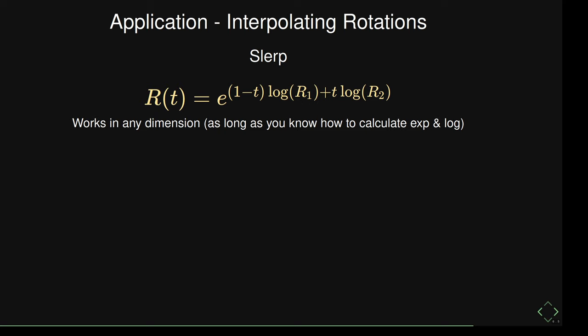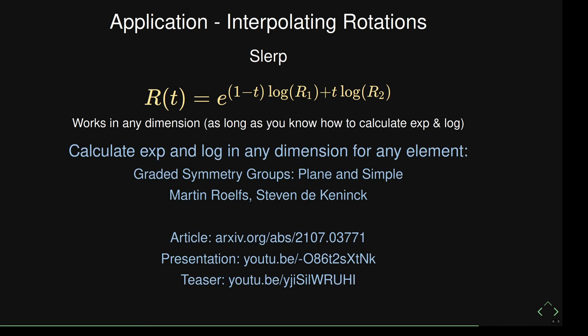The only challenge is knowing how to calculate the exponential function and logarithm in general. We knew how for elements that square to −1, but in general it's more tricky. There was a recent paper called 'Graded Symmetry Groups: Plane and Simple' which showed how to calculate the exponential and logarithm in any dimension for any GA element. Links are provided if you want to look at that.